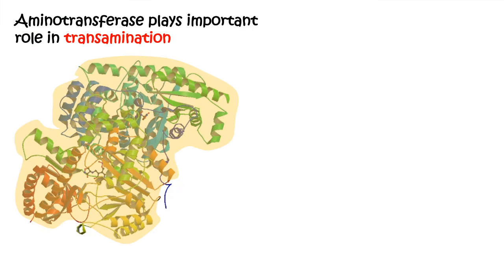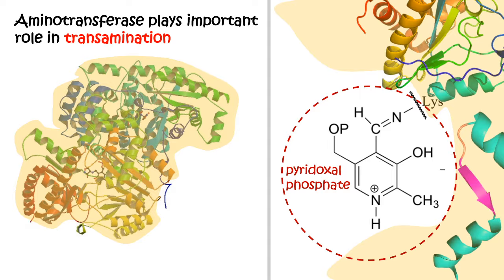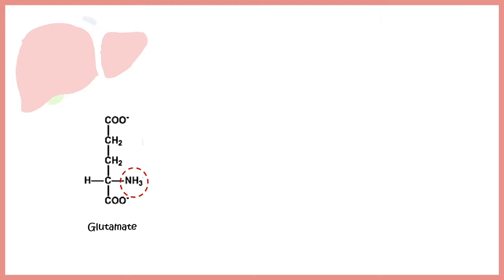Aminotransferases play an important role in transamination, and the key prosthetic group here is pyridoxal phosphate (PLP), which is very important for the functionality of the aminotransferases. Moving to the next step: we now have glutamate, with the amine group stored in its format.